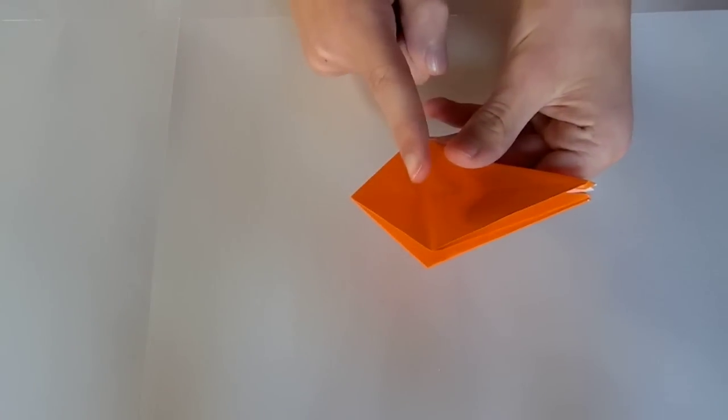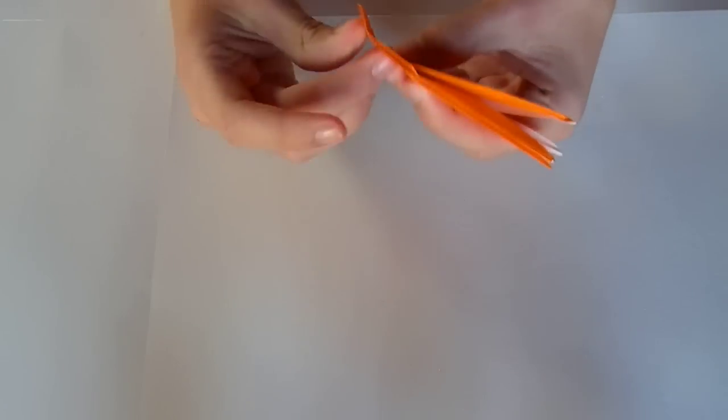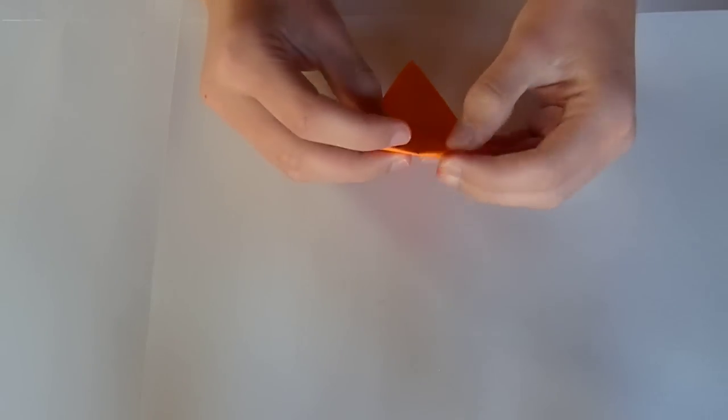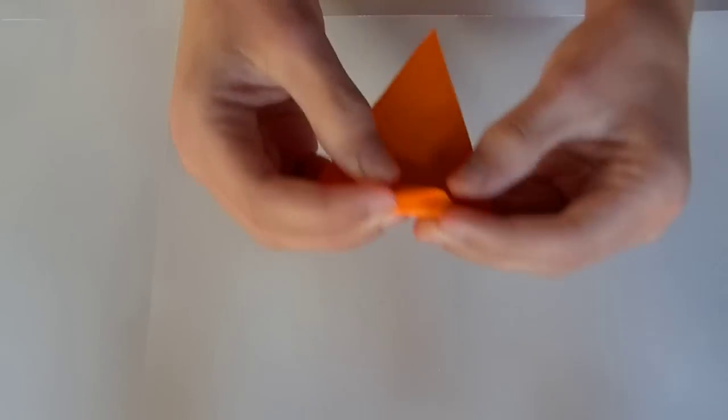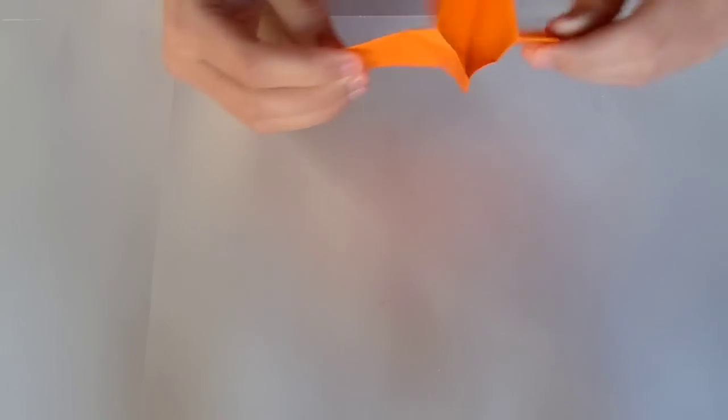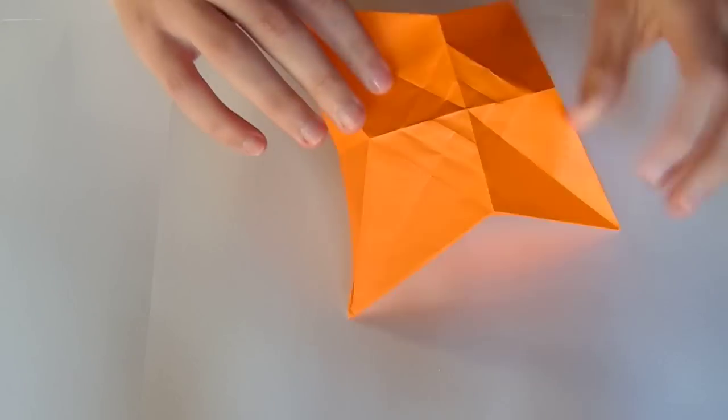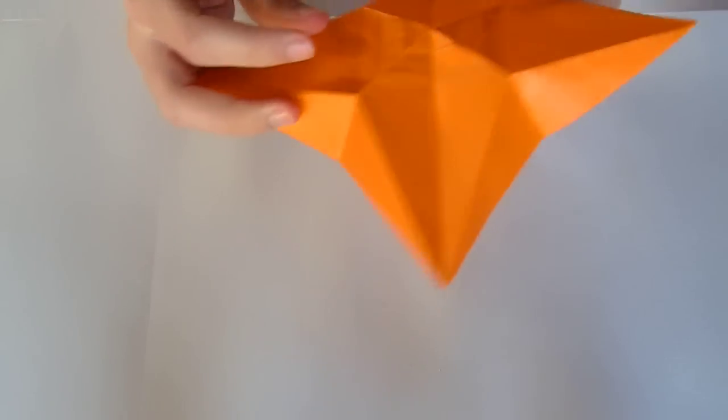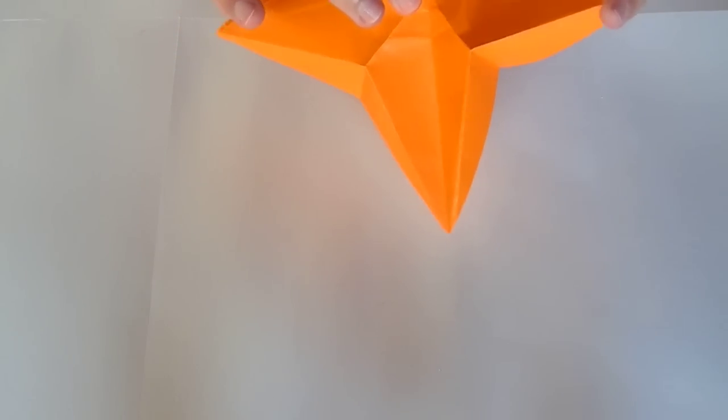And now we're going to approximate one third here. So try to approximate. Once you have approximate one third, then make sure to crease sharply. And now unfold everything again and pinch mountain fold along the existing creases where you've approximated one third.